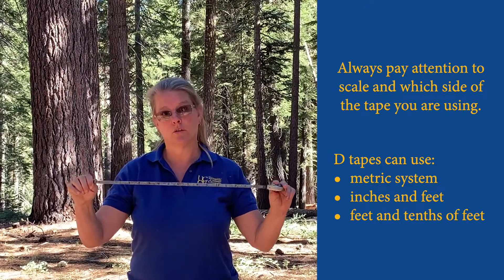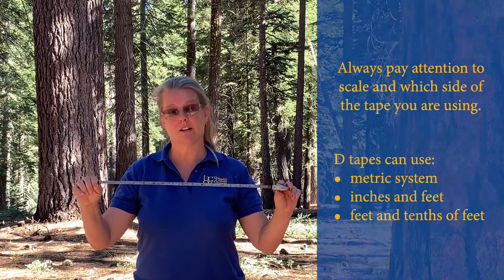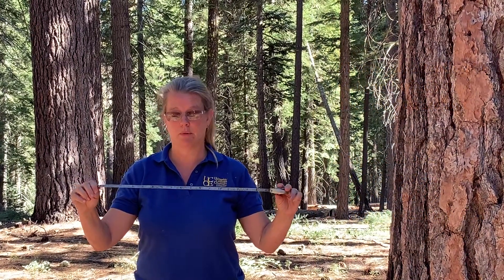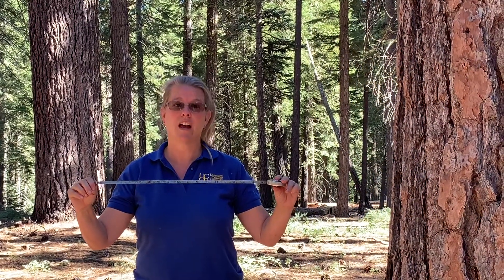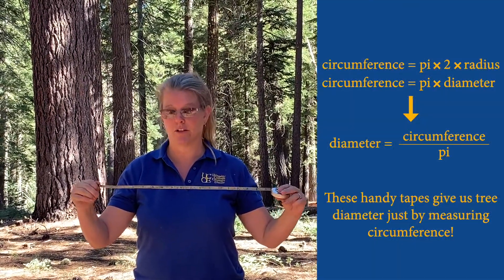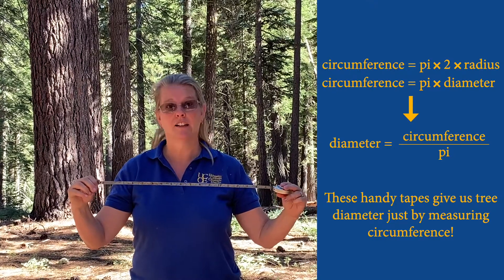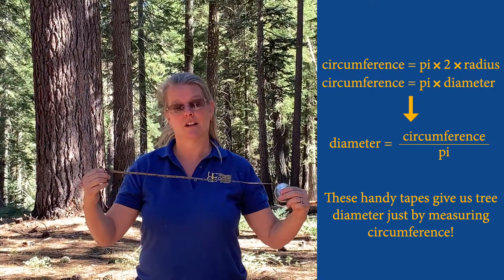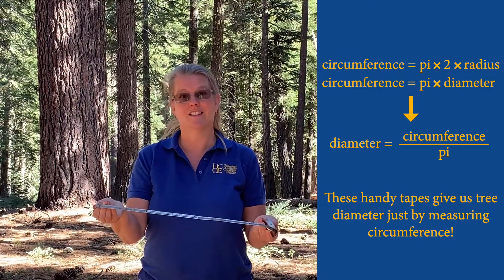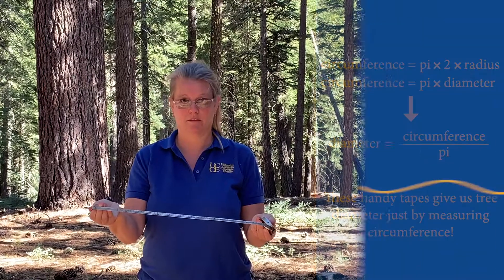One side is a normal tape, just like any measuring tape. But on the other side, it's been divided by the magic number pi — so that a circumference divided by pi gives you the diameter.